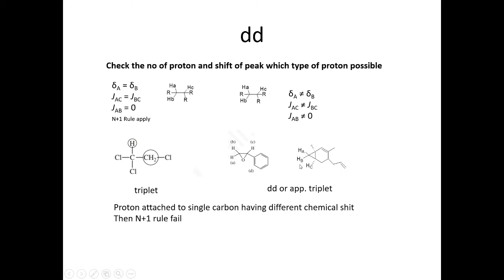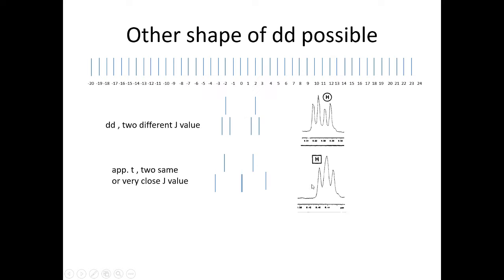But what happens when this type of molecule has the same J value but different chemical shift? HC may appear as a triplet. Here the intensity is 1:2:1, so we see here an apparent triplet.